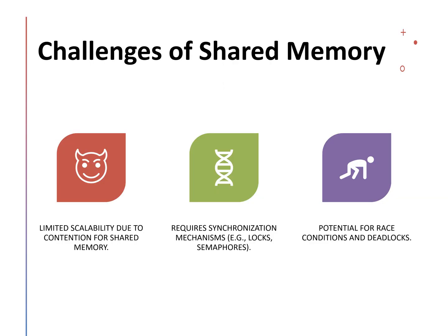Despite its advantages, shared memory does have some challenges. Scaling becomes a major issue as you add more processors, because they all rely on the same memory. This can create bottlenecks and contention, especially when multiple processors try to access the same data simultaneously. It also requires synchronization mechanisms such as locks and semaphores.